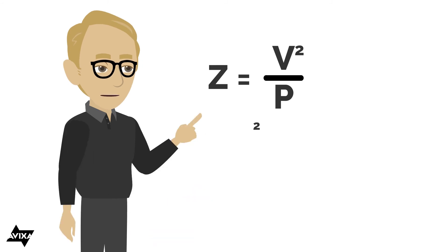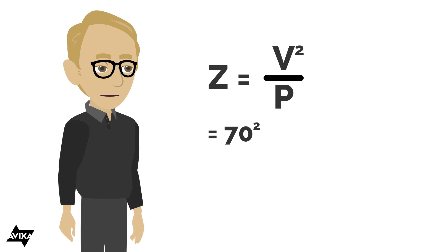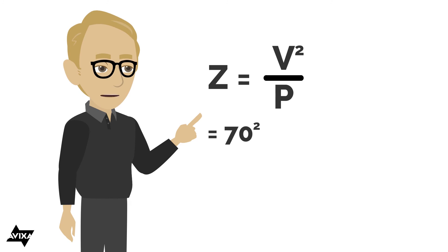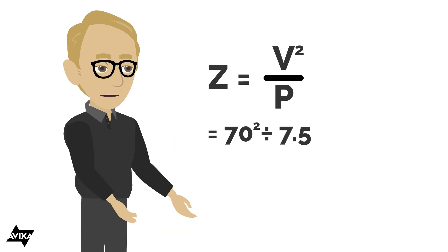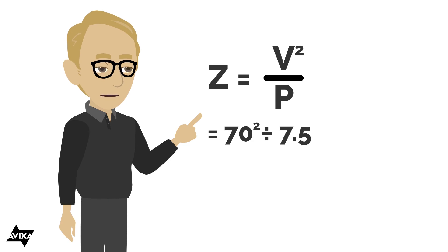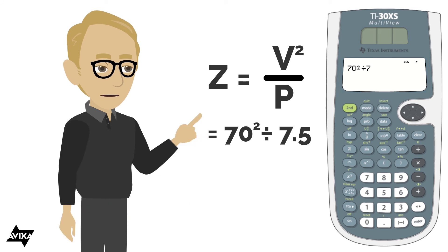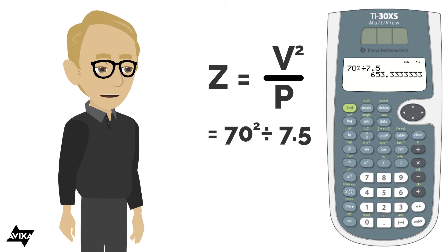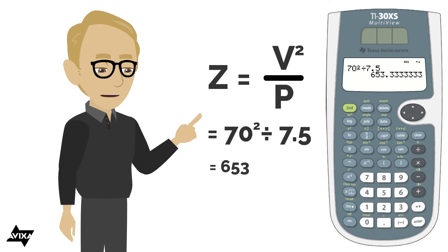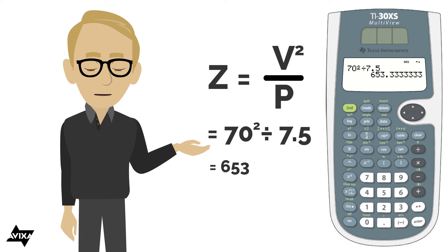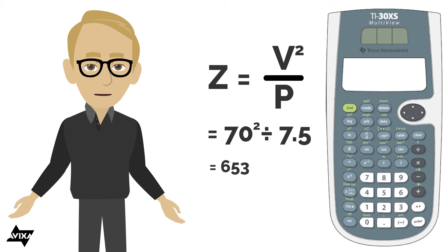Let's say we're working with a 70-volt system — so our voltage is 70 squared. If it were a 100-volt system, it would be 100 squared. And let's say we're tapping a loudspeaker at 7.5 watts. So 70 squared divided by 7.5 — for an individual loudspeaker — gives us about 653 ohms of impedance. Again, this gets us in the ballpark, not exact. But now I can measure the loudspeaker with an impedance meter and verify what I've predicted.